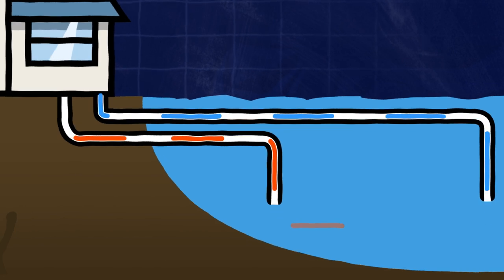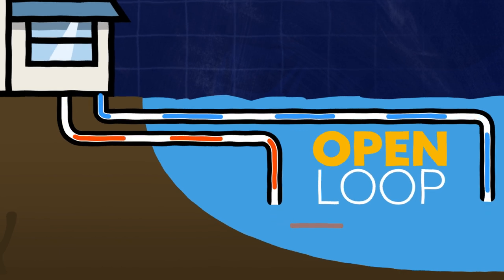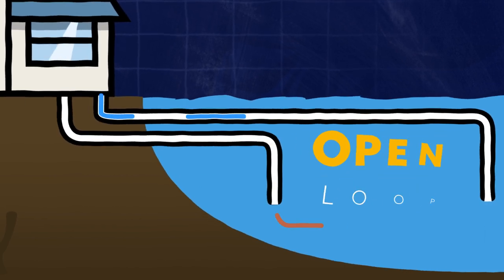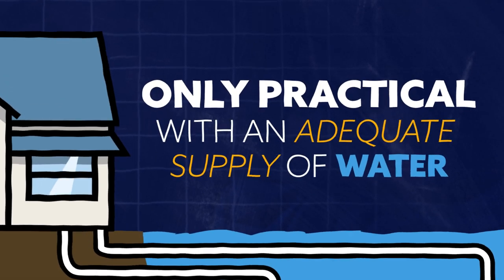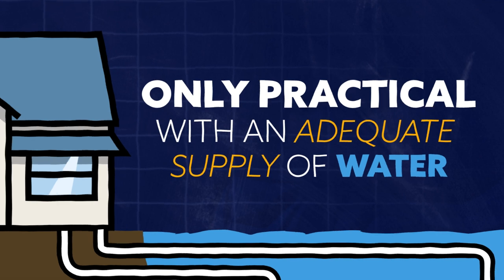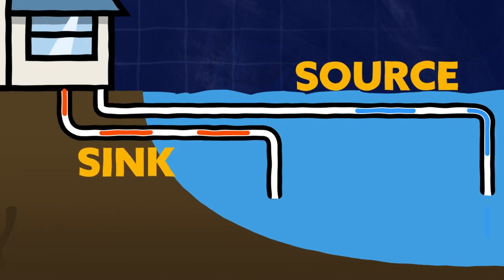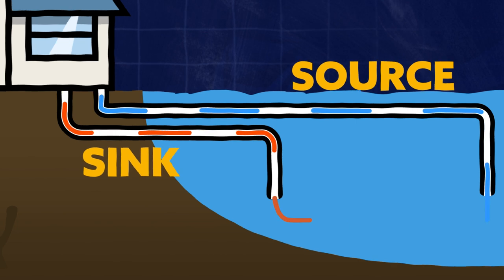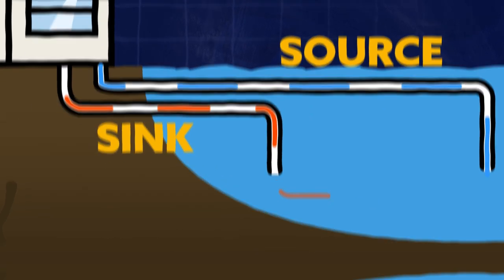However, the water moving in and out of the system gives it its name — open loop — because it dispenses the water after it runs through the piping. This option is only practical where there's an adequate supply of water from a well, pond, or lake to be the source and the sink for the system, the sink being where the used water is released from the loop system.